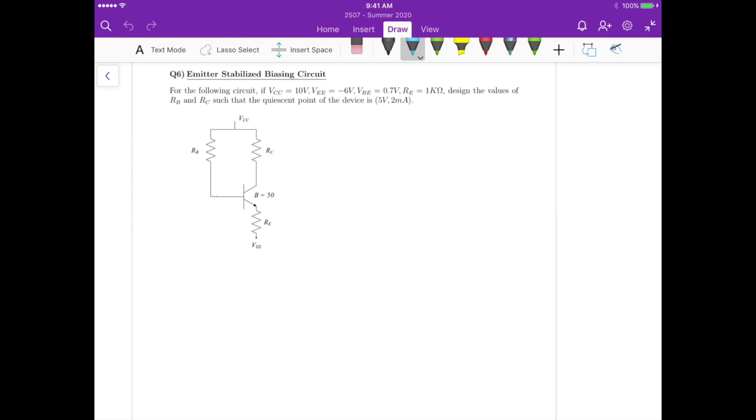So in this case, it means that from the quiescent point, first we have VCE equals 5 volts and IC equals 2 milliampere. Another important thing is that the gain beta here is 50, so it's not notated at the circuit, so that's an important information.